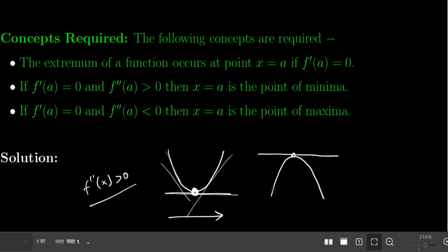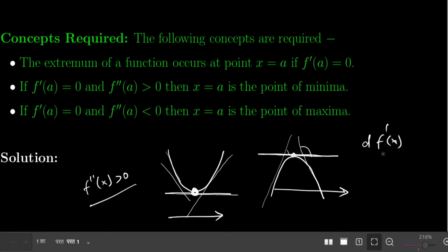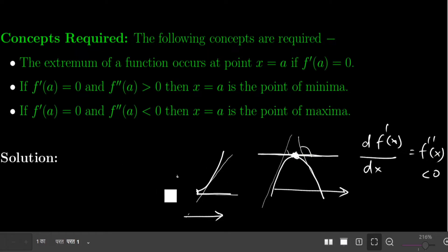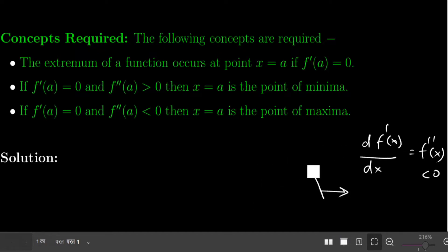For a maximum: looking at a curve with a peak, the tangent makes an acute angle (positive slope) before the maximum, becomes zero at the maximum, and then makes an obtuse angle (negative slope) after. So the derivative goes from positive to zero to negative — it is decreasing. Therefore the double derivative is negative. A negative double derivative confirms a maxima. These rules don't need to be memorized; you can construct them by visualization.